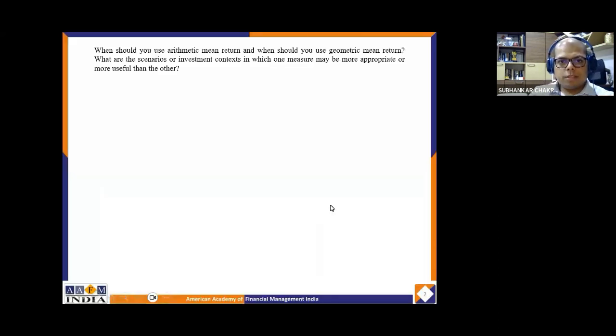The query is when should you use arithmetic mean return and when should you use geometric mean return? What are the scenarios or investment contexts in which one measure may be more appropriate or more useful than the other?